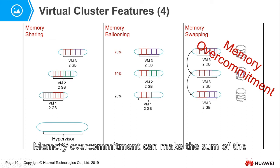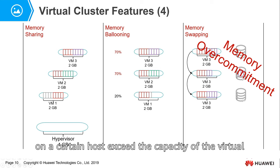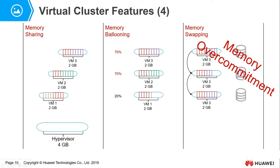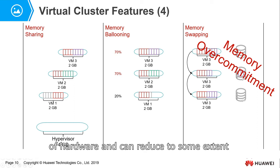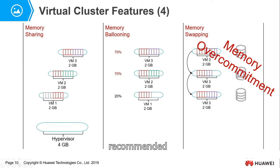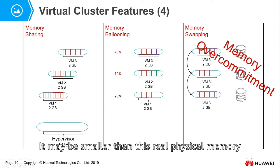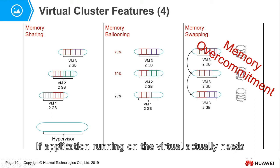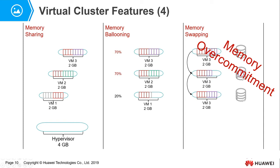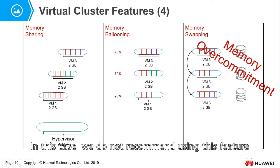Memory overcommitment allows the sum of the virtual memory of all virtual machines on a host to exceed the capacity of the physical memory. Memory overcommitment can improve the utilization of hardware and reduce, to some extent, customers' investment. But in some cases, memory overcommitment is not recommended. Because after memory overcommitment is turned on, the memory allocated to virtual machines may be smaller than the real physical memory needed. If the application running on the virtual machine actually needs that much memory, it will run very slowly. In this case, we do not recommend using this feature.